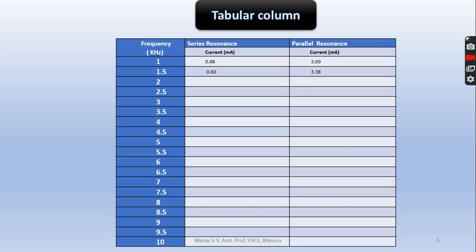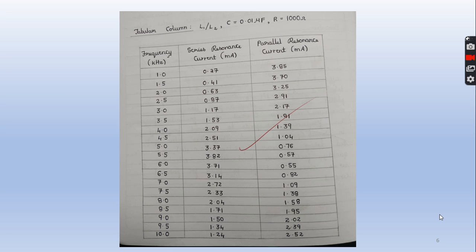Tabulation: So we have frequency, series current, as well as parallel current. We have to take readings from 1kHz to 10kHz. This is one of the model graphs which we have already taken the readings.